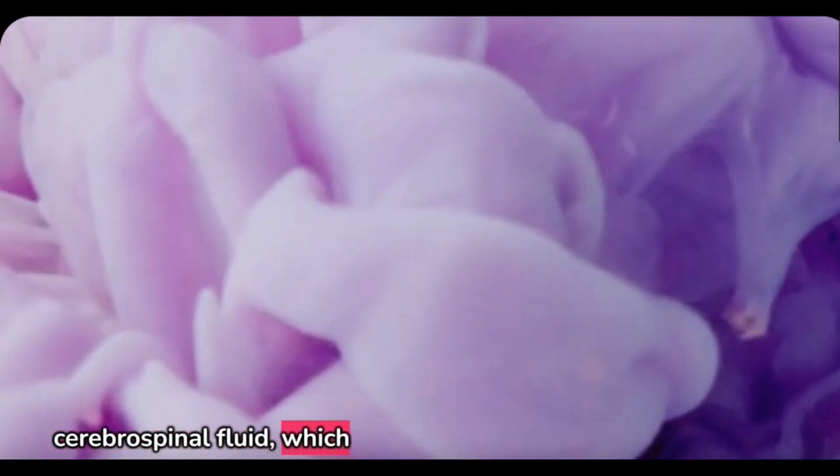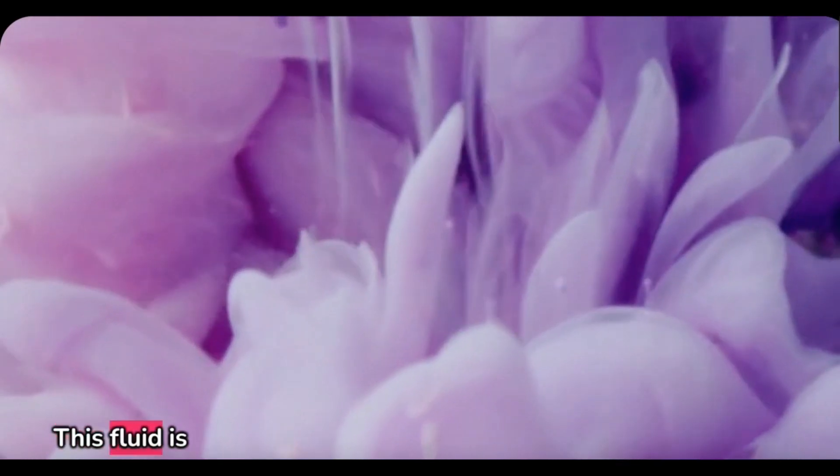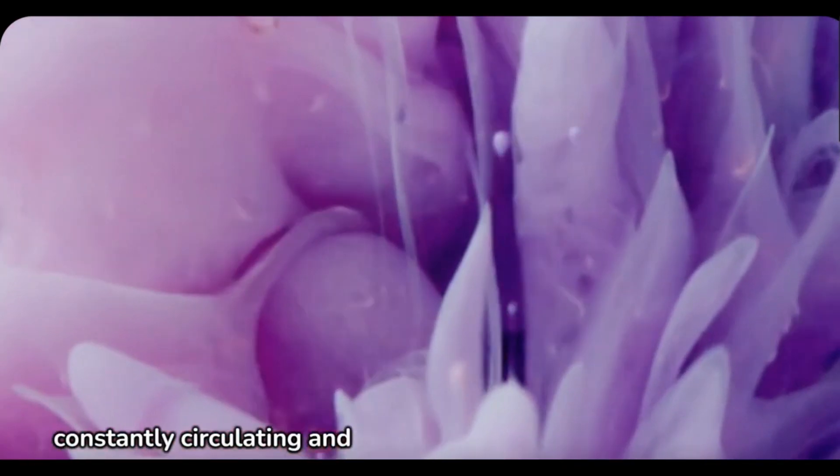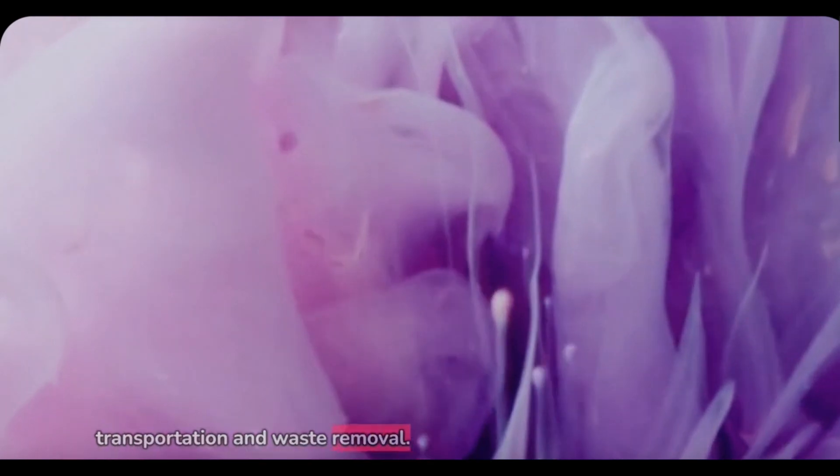The brain is surrounded by cerebrospinal fluid, which acts as a shock absorber, protecting it from injury. This fluid is constantly circulating and plays a role in nutrient transportation and waste removal.